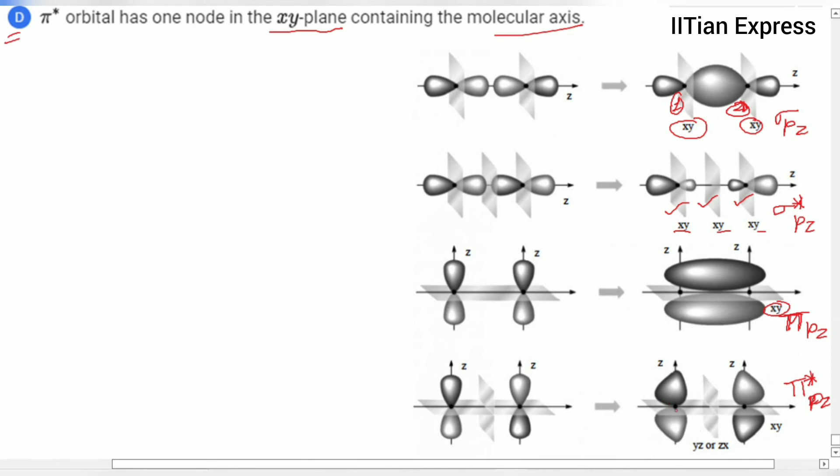So here we are having two nodes - the first one is in the xy-plane and the second one may be in the yz-plane or zx-plane. So option D is also the correct one.